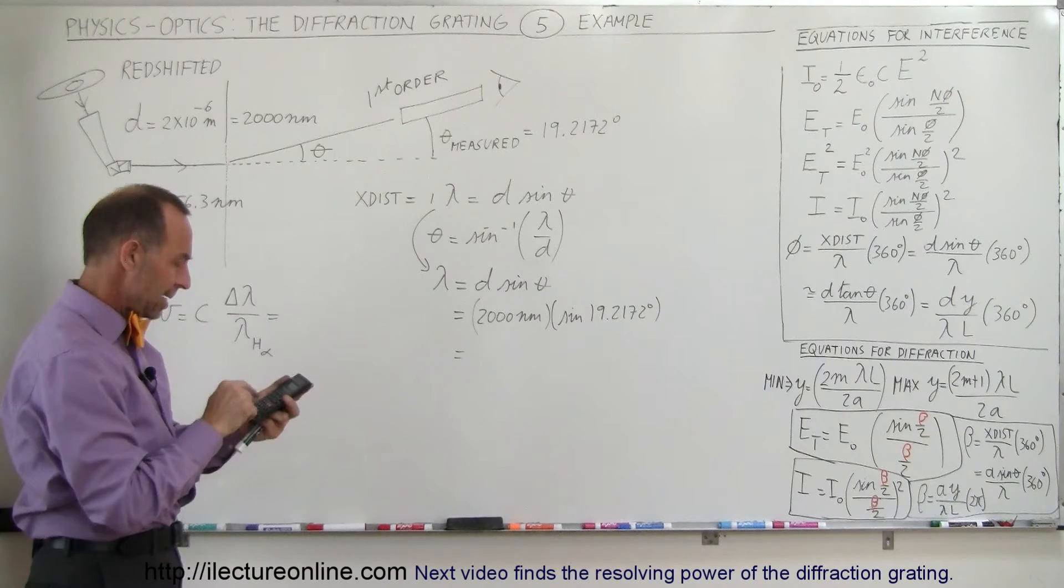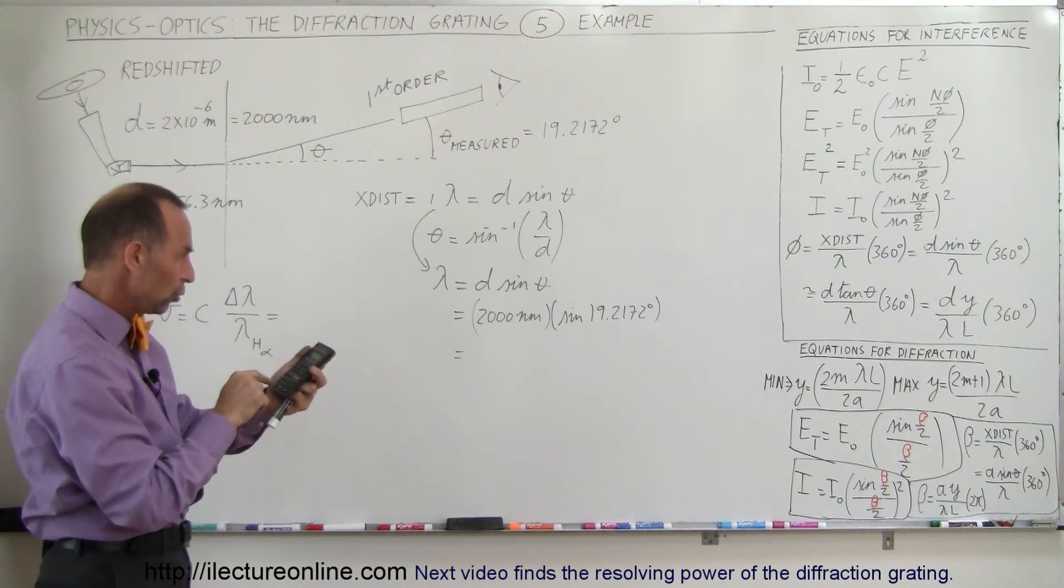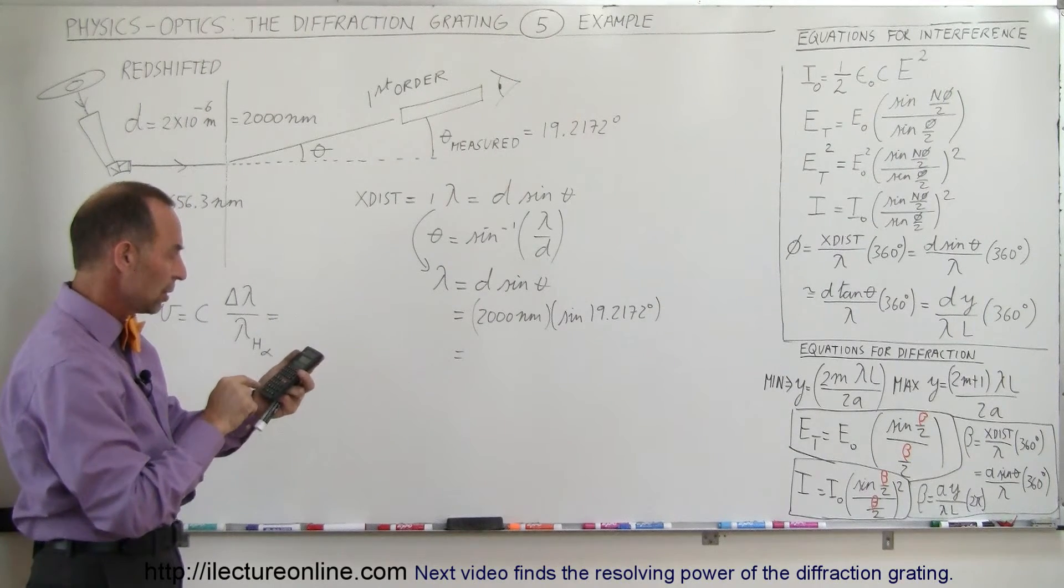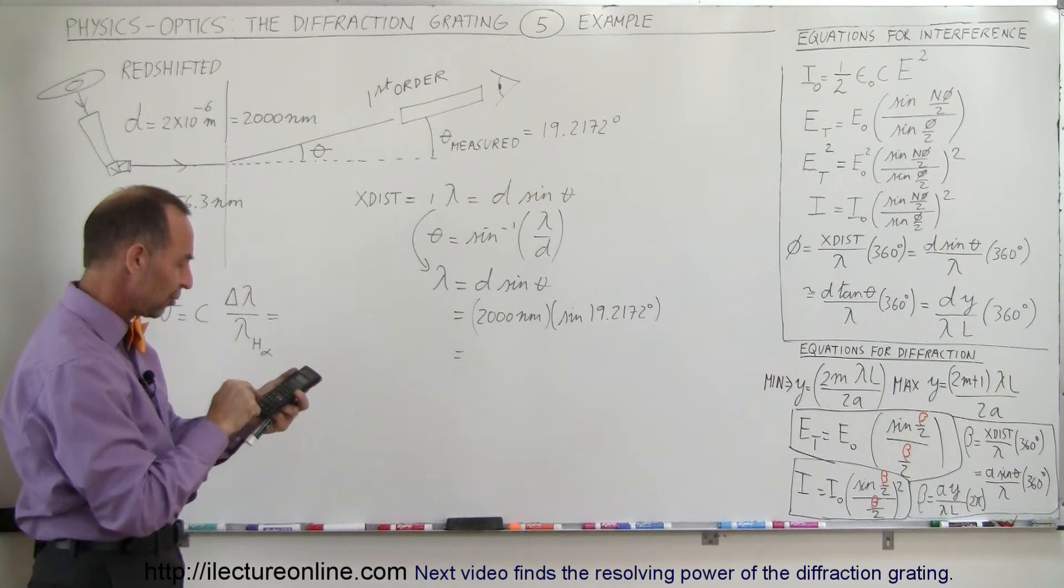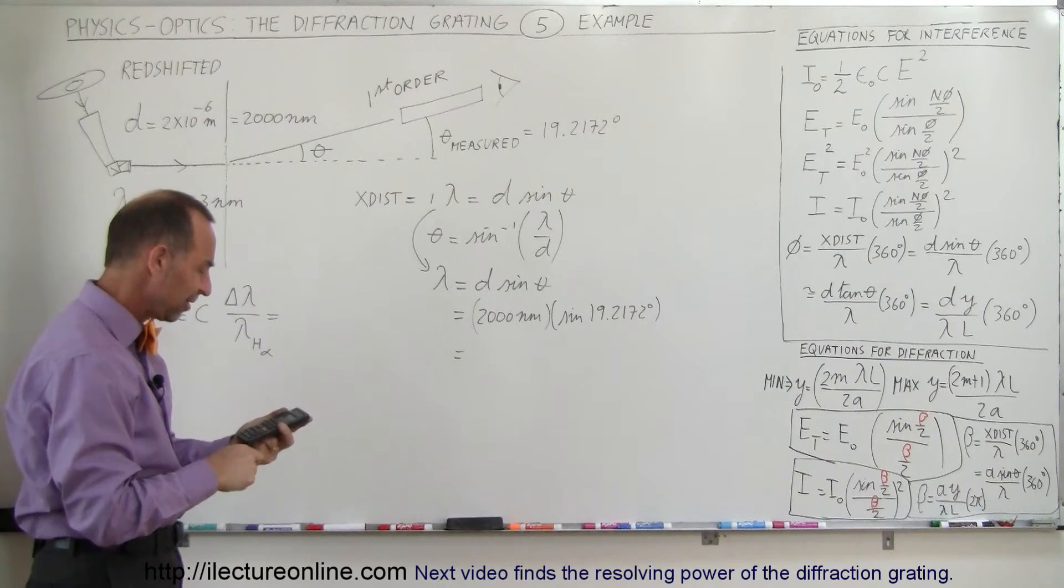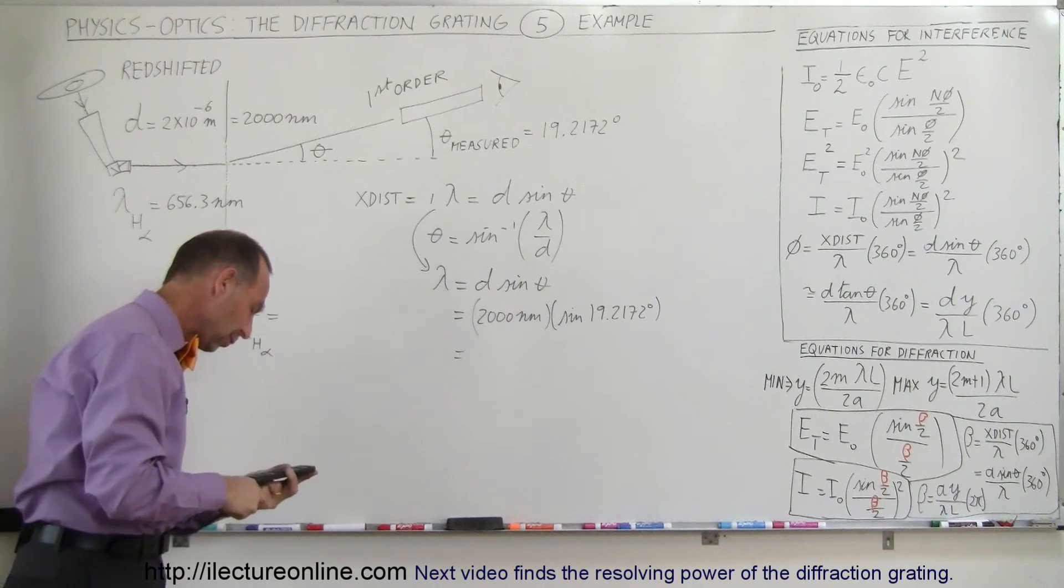We take 19.2172 and we take the sine of that, and then we multiply times 2,000, and we get 658.30.